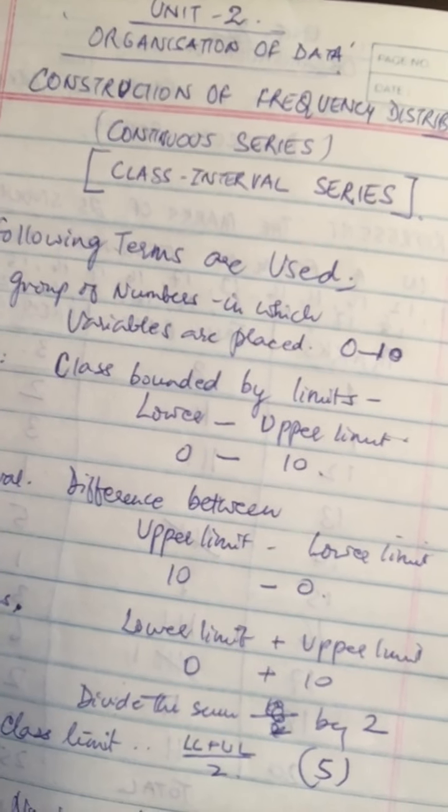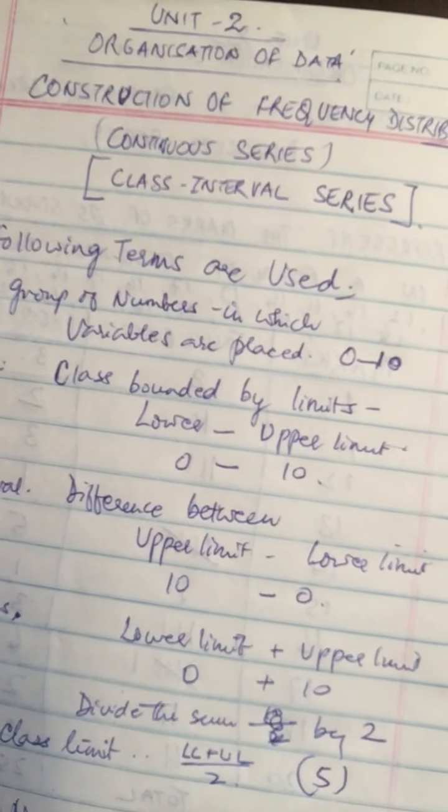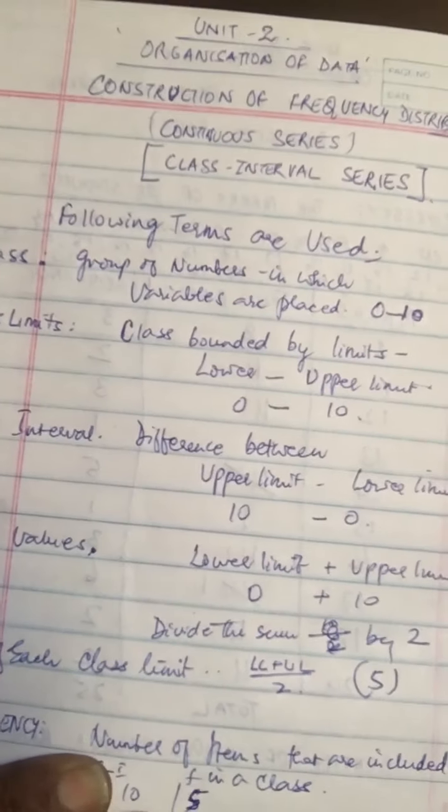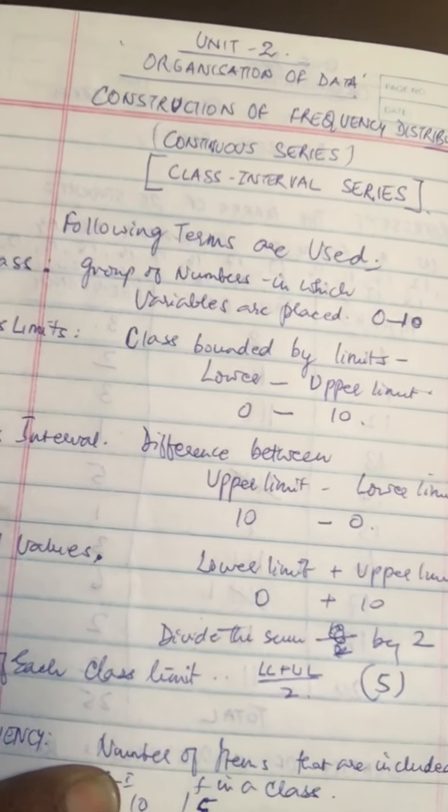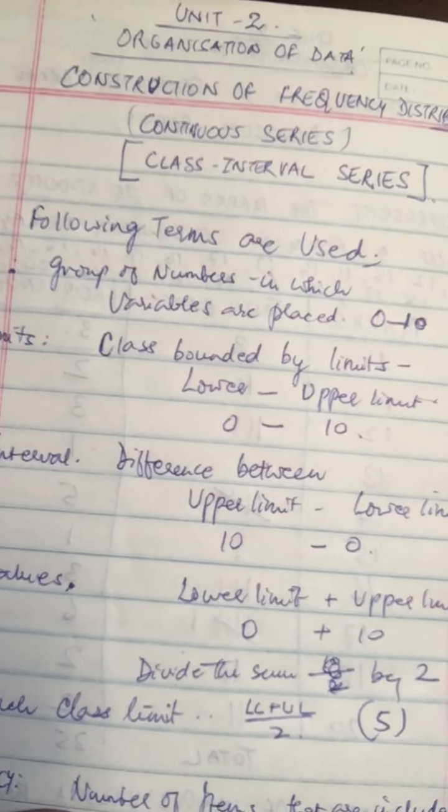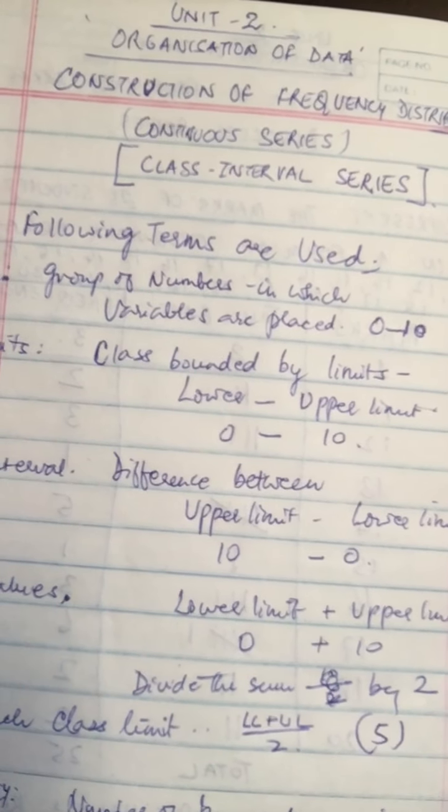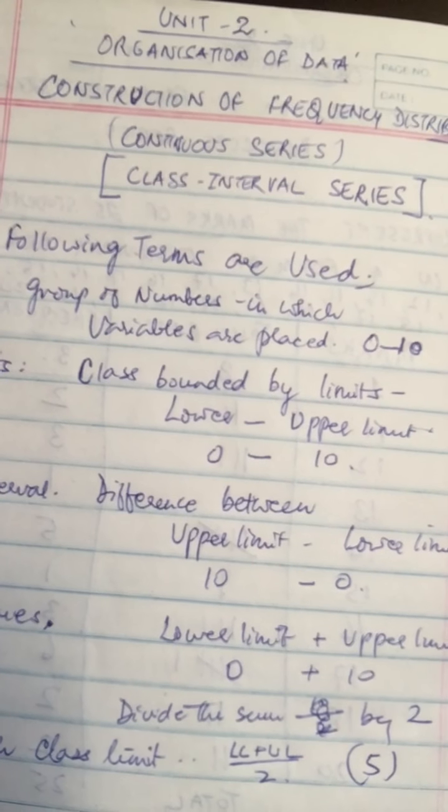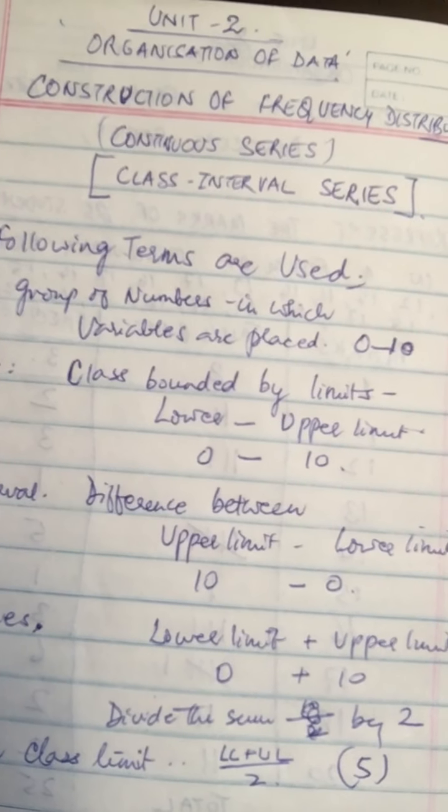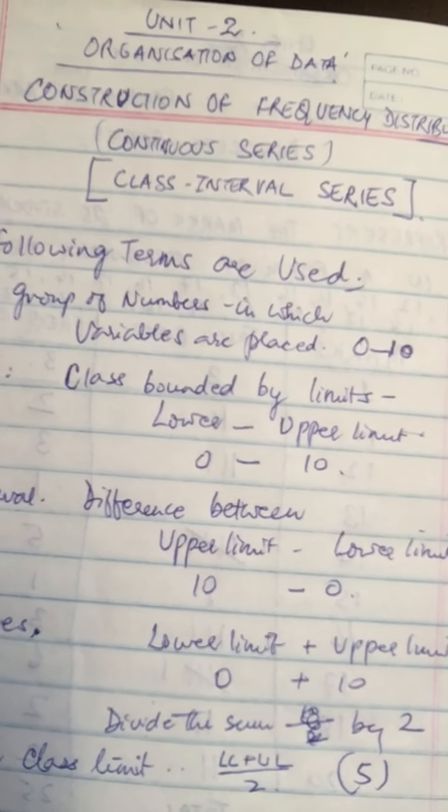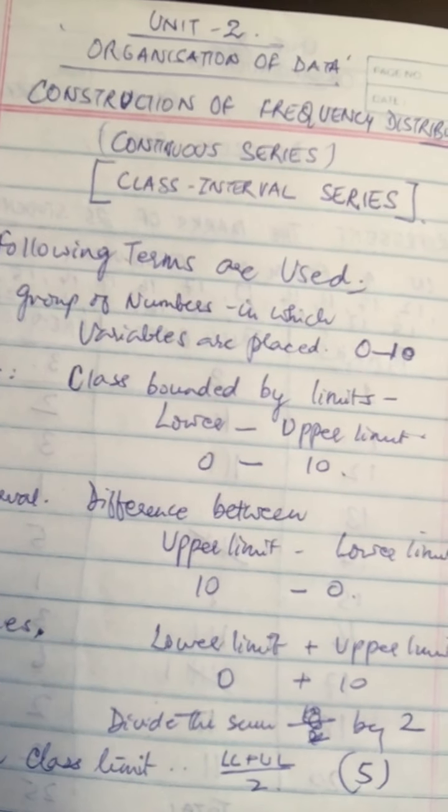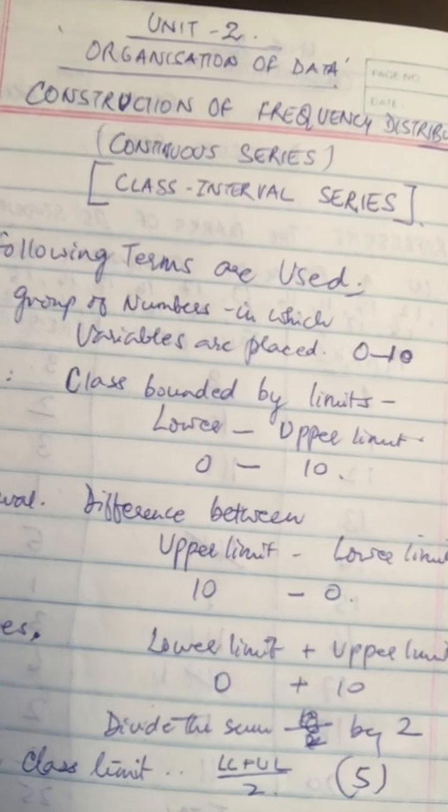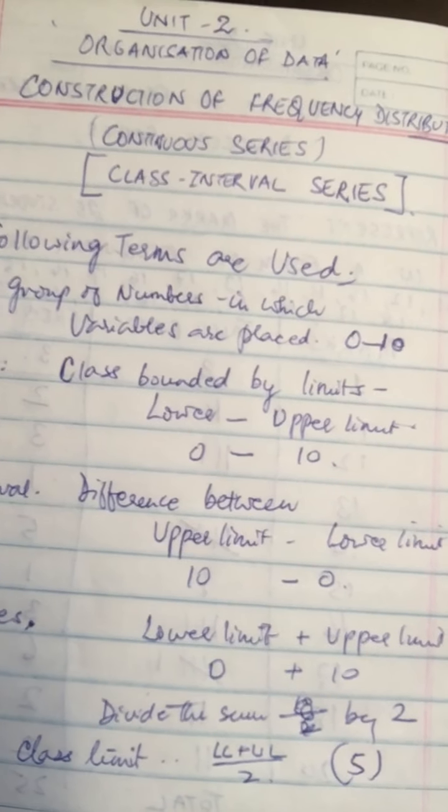The data is grouped. So we don't know. We know that within this range, so many are there. That is the only difference. So the main difference between the frequency array and frequency distribution is that in the case of the former, the variable is discrete and here the variable is continuous. That means here the variables are grouped. And there they are singly put, the variables.